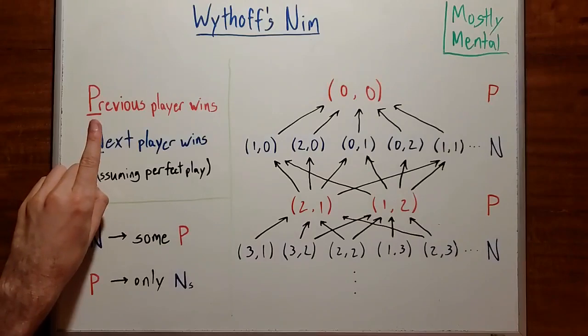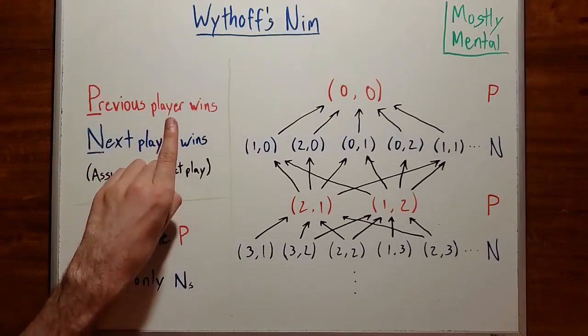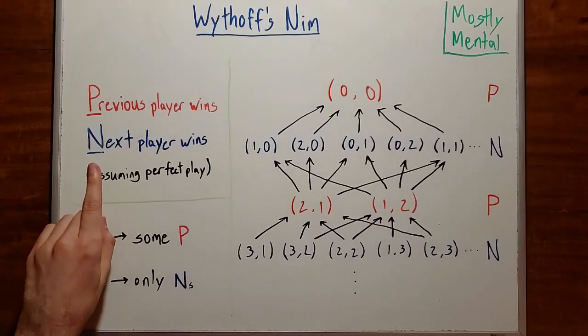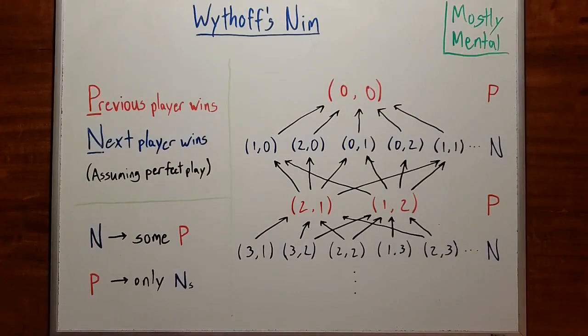A P position is a position where the player who just moved into that position, the previous player, can guarantee a win, assuming they play perfectly going forward. And an N position is a position where the next player to move wins. From an N position, the next player has a winning move, and after that move, that player will become the previous player, so the resulting position will be a P position. But from a P position, there can't be a winning move, so every move will give the opponent a winning play, and will thus be an N position.